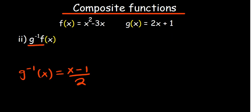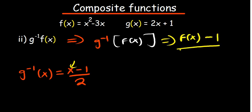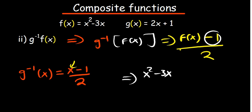The question asks for g inverse of f(x). This means in the first function, g inverse of x, at every point where we have x we put f(x). Our g inverse of x is (x minus 1) over 2, so where there is x we put f(x): that gives us (f(x) minus 1) over 2. Substituting f(x) equals x squared minus 3x, we get (x squared minus 3x minus 1) over 2.